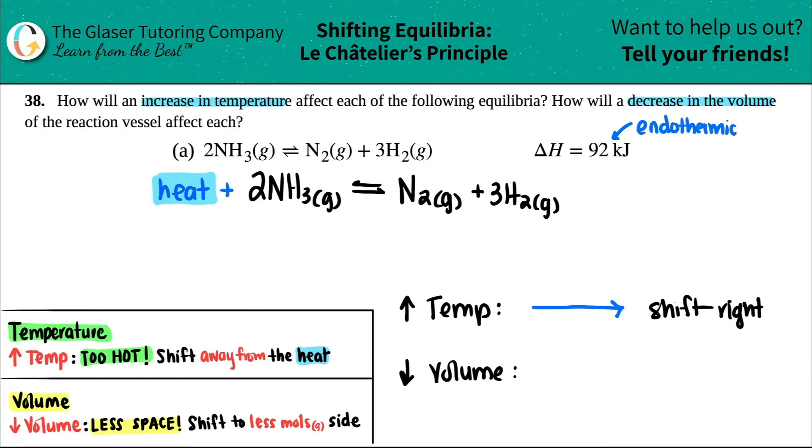If you have less space, you want to always favor the side that has less moles. Less space, less volume, shift to the less moles of gas side.